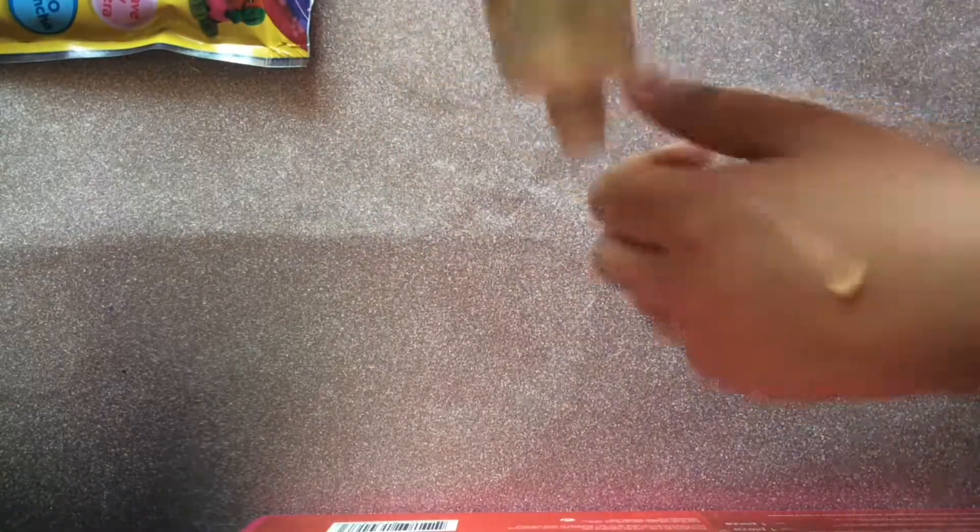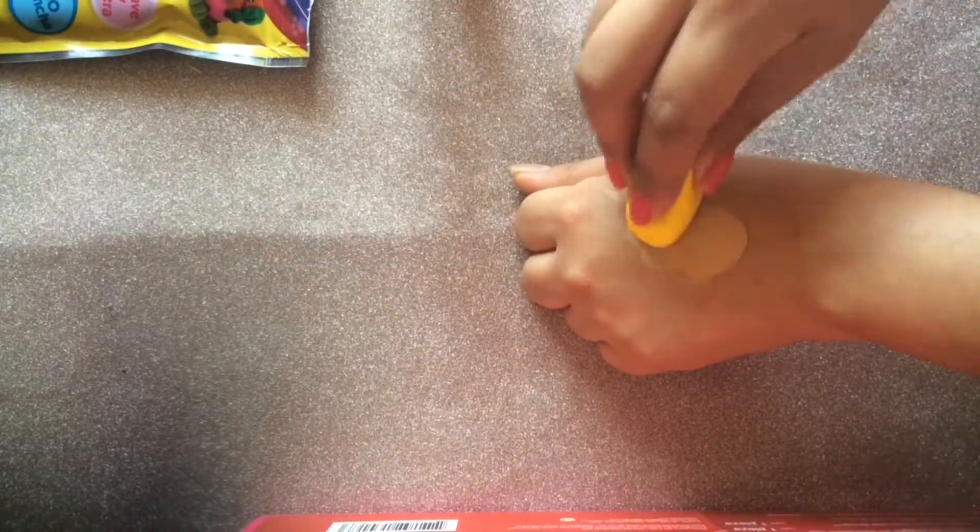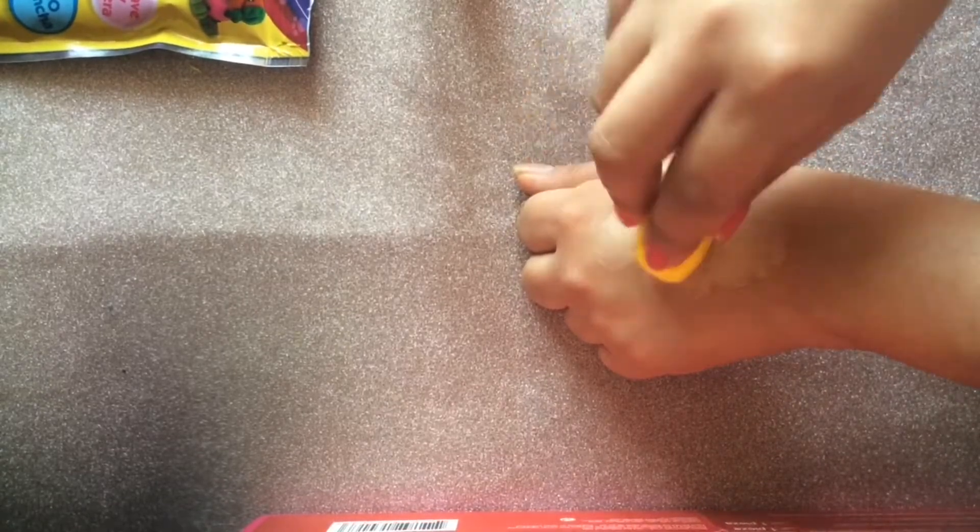Now I'm just going to put some liquid makeup on my hand and apply it in the same way that you would do it with the silicone sponge, and it actually does the job.